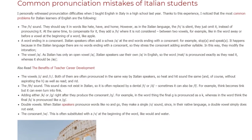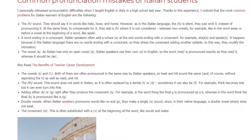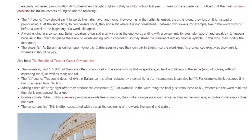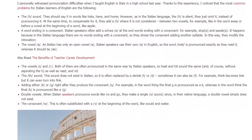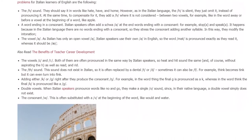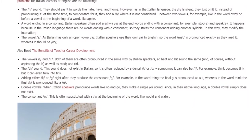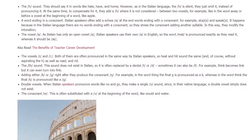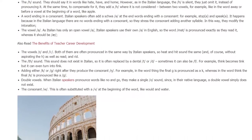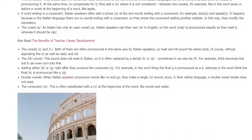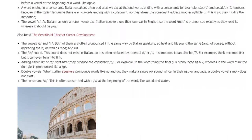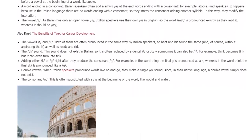The TH sound: this sound does not exist in Italian, so it is often replaced by a dental T or D, and sometimes it can also become F. For example, 'think' becomes 'tink' or even 'fink.' Italians also add either K or G right after producing the consonant — for example, in the word 'think' the final G may be pronounced as a K, or the final K as a G.